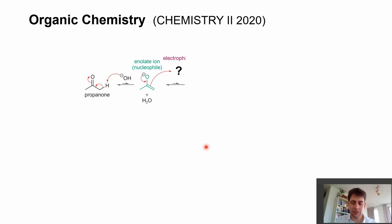Another interesting case for alpha substitution at carbonyl components is the so-called aldol reaction. This is actually a very important reaction because it gives access to very extended carbon frameworks, and we're going to discuss this in detail now.